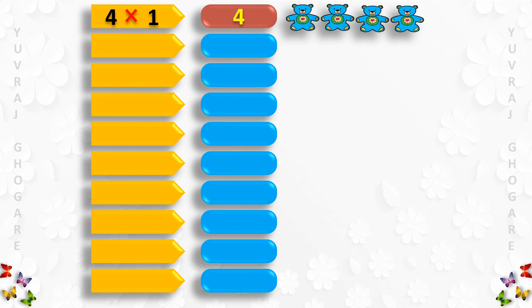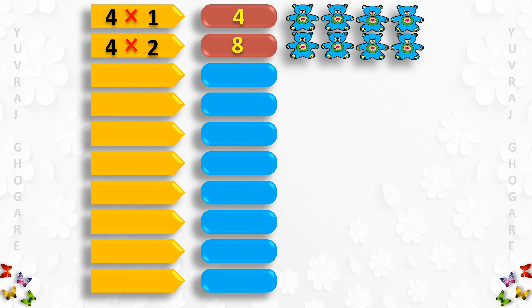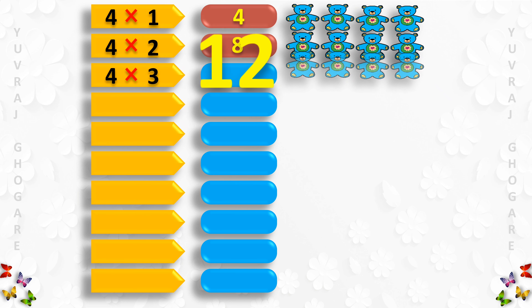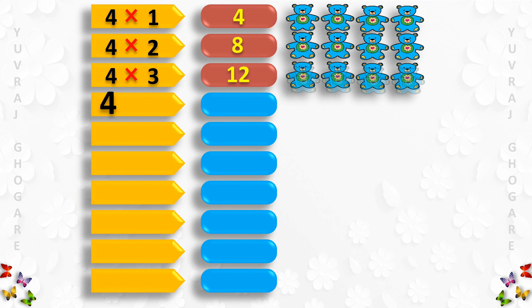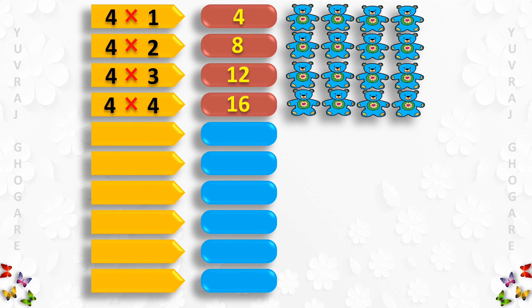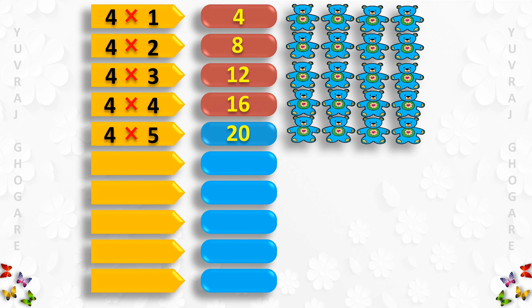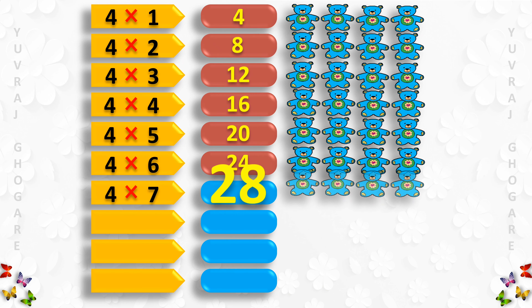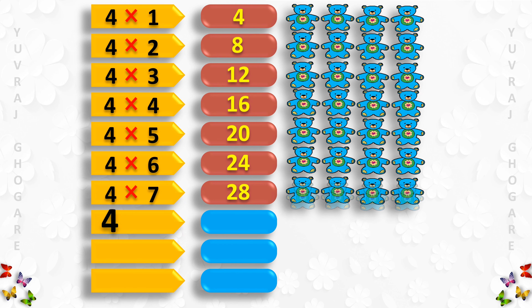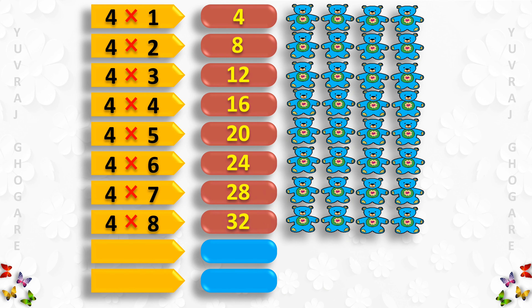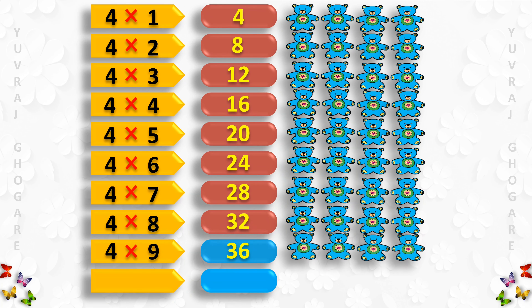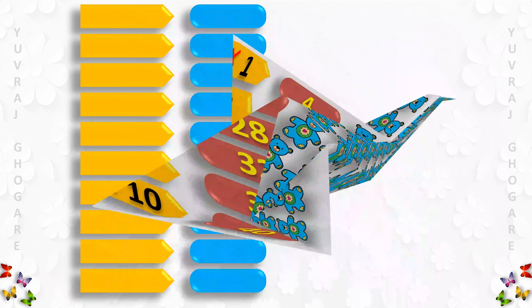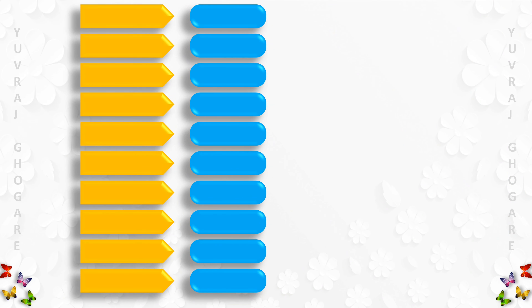Table of 4: 4 1s are 4, 4 2s are 8, 4 3s are 12, 4 4s are 16, 4 5s are 20, 4 6s are 24, 4 7s are 28, 4 8s are 32, 4 9s are 36, 4 10s are 40.